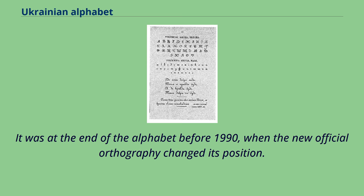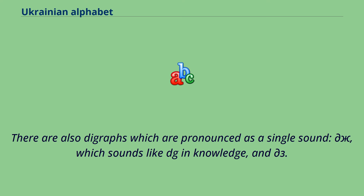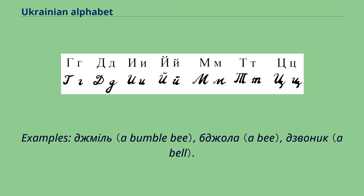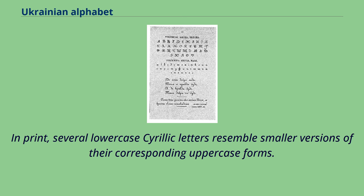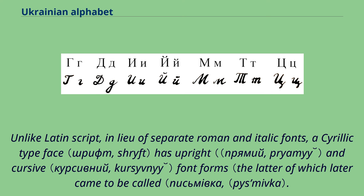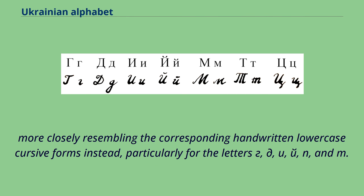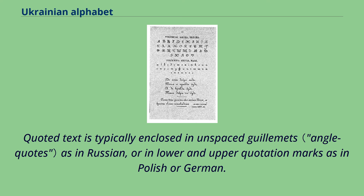The soft sign indicates the softening of the preceding consonant letter; it was at the end of the alphabet before 1990 when the new official orthography changed its position. The apostrophe indicates that the consonant preceding a soft vowel is not palatalized when it otherwise would be. There are also digraphs pronounced as a single sound, similar to the 'dg' in 'knowledge.' Several lowercase Cyrillic letters resemble smaller versions of their uppercase forms. Handwritten Cyrillic cursive letter forms vary somewhat from their printed counterparts. Unlike Latin script, a Cyrillic typeface has upright and cursive font forms, and some cursive lowercase letters bear little resemblance to their upright counterparts. Quoted text is typically enclosed in guillemets or in lower and upper quotation marks.